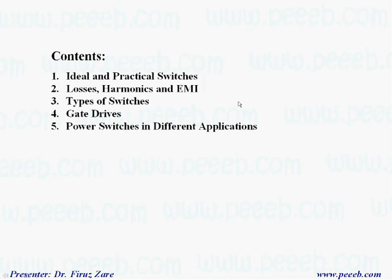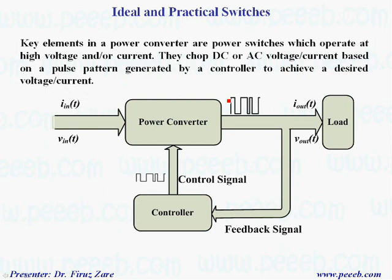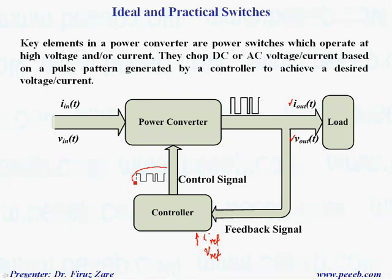Key elements in a power converter are power switches, which operate at high voltage and/or current. They chop DC or AC voltage and current based on a pulse pattern generated by a controller to achieve a desired voltage or current. A controller can measure the output voltage and output current compared with the reference signal, which can be either current or voltage. The controller then generates the gate signal applied to the power converter, which turns the power switches on and off.